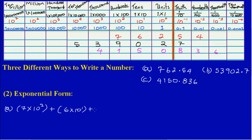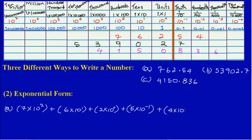Then I have a 2 in the 1s column, so that would be (2 × 10⁰). As I move across the decimal point, I have a 5 in the tenths column, and in exponential form that is 10 to the negative 1, so I have (5 × 10⁻¹). Then I have (4 × 10⁻²), because the 4 is in the hundredths column, which is the second decimal place.